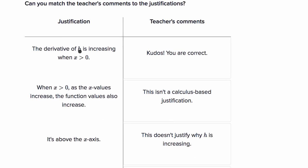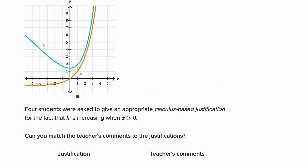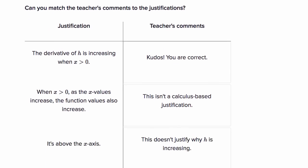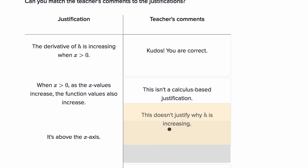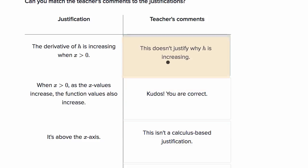One student wrote, the derivative of h is increasing when x is greater than zero. It is indeed the case that the derivative is increasing when x is greater than zero, but that's not the justification for why h is increasing. For example, the derivative could be increasing while still being negative, in which case h would be decreasing. The appropriate justification is that h' is positive, not that it's necessarily increasing. This doesn't justify why h is increasing.